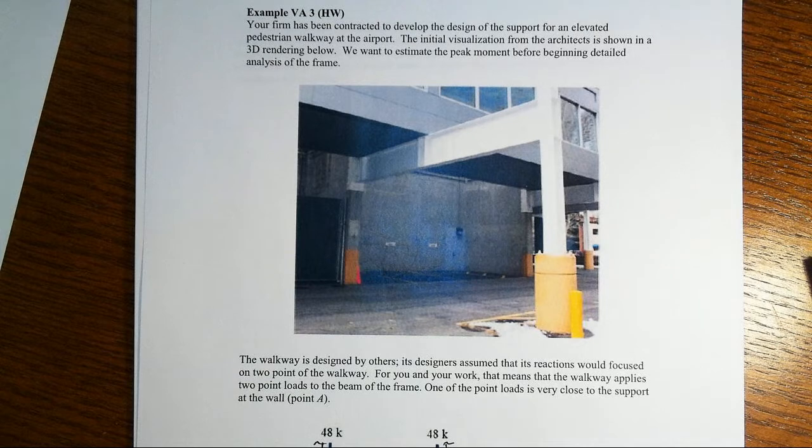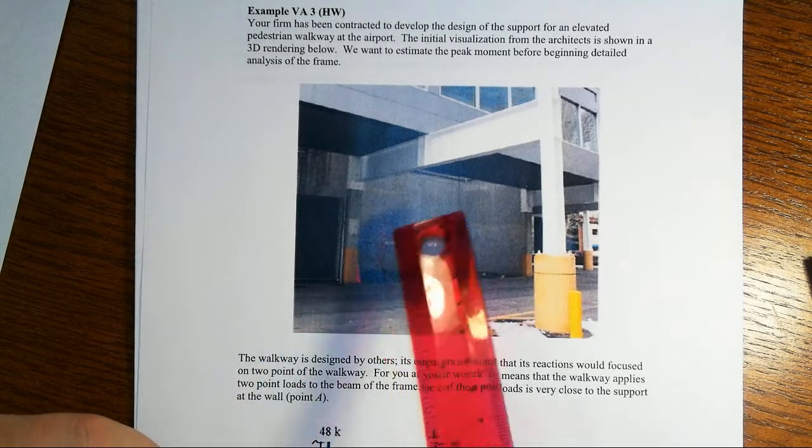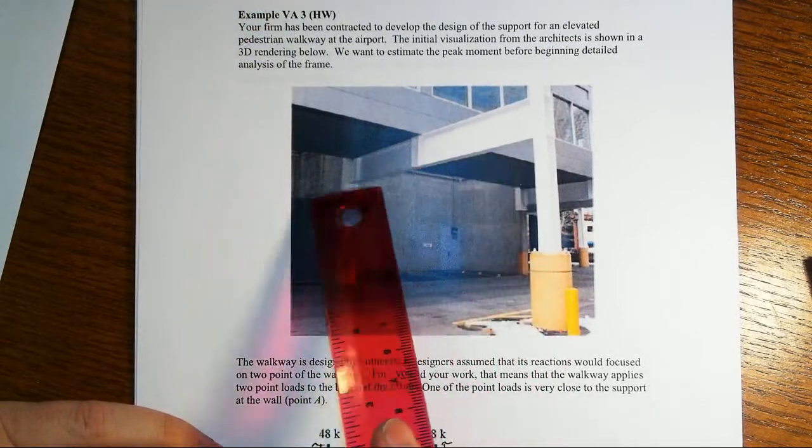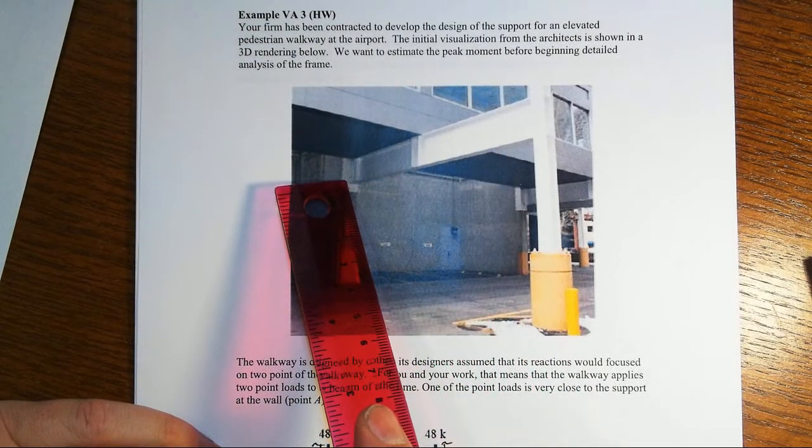Alright, in this homework assignment we are taking a look at this support for the pedestrian walkway. It is comprised of a horizontal beam that's attached to the wall at the far left.